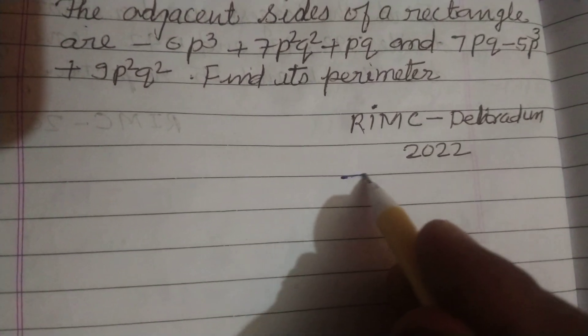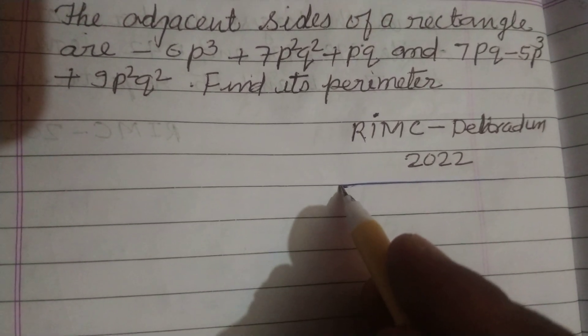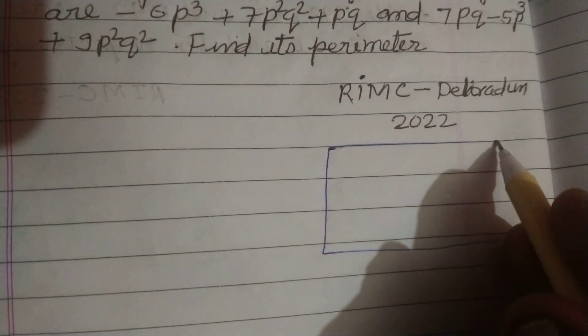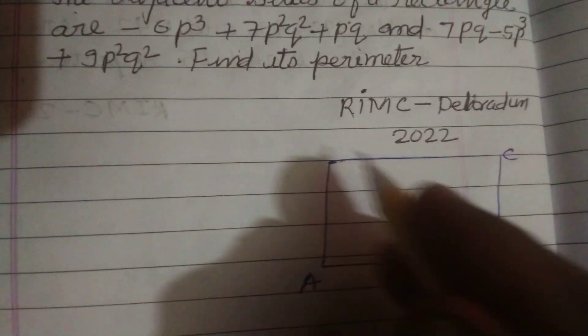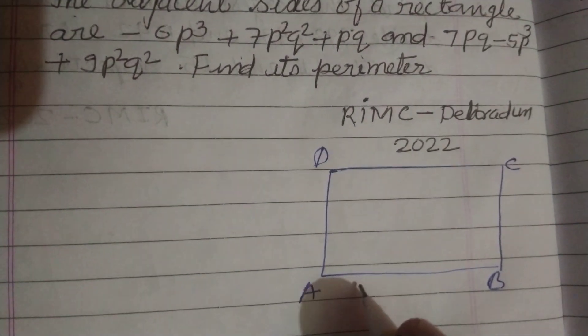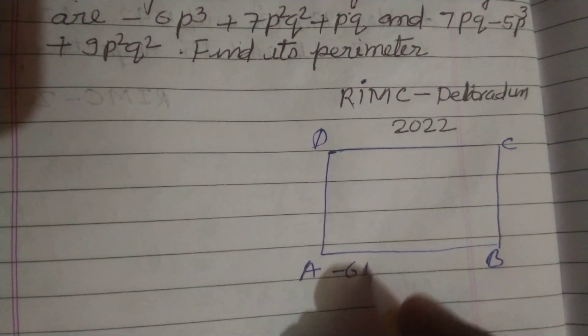So here it is a rectangle ABCD. The adjacent sides are -6PQ + 7P²Q² + PQ,